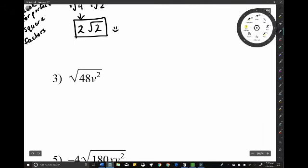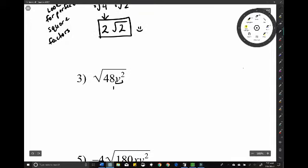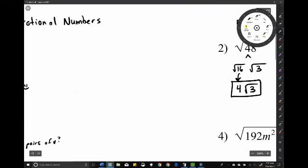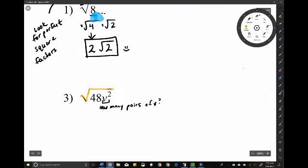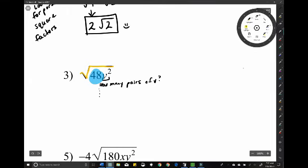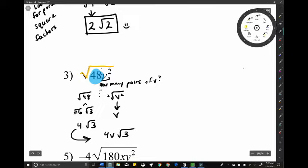When we throw variables into the mix, you're asking yourself how many pairs of V can I take out of, let's think of it like a drawer, how many pairs can I take out of this sock drawer? The 48 we're going to treat the same as in example 2, which is 4 roots of 3. If we're taking the square root of V squared, I could take out one pair, which means it's just a V without a square root. Now, anything outside the square root goes first, and anything inside a square root stays inside, goes later.